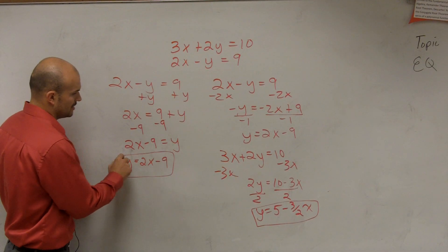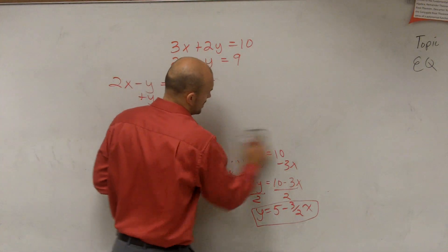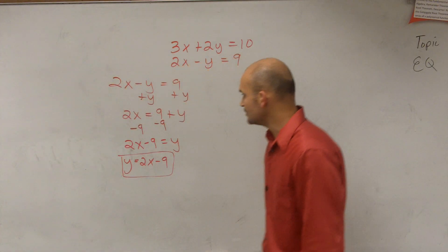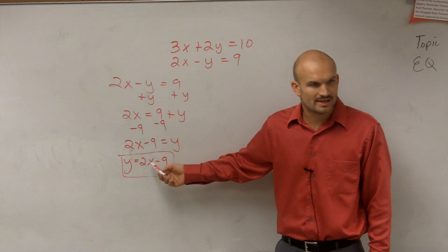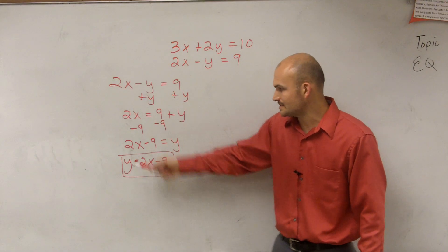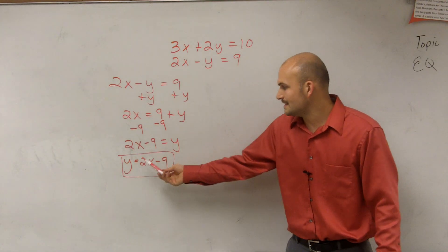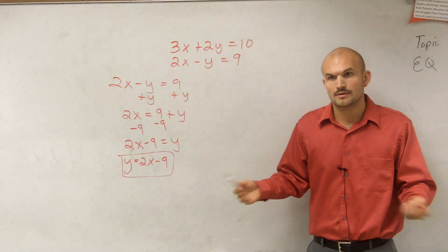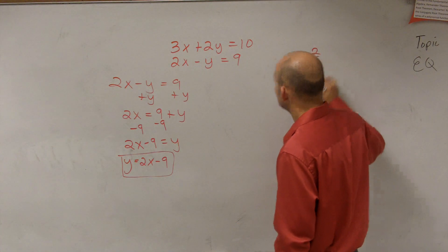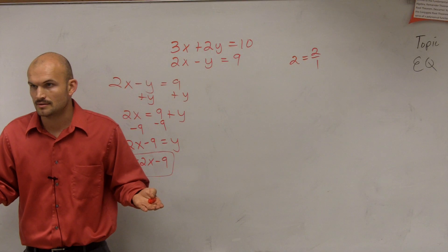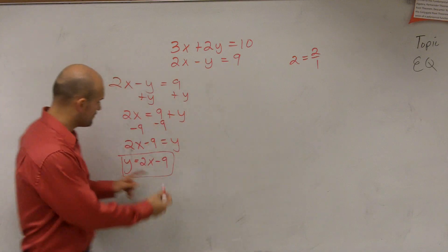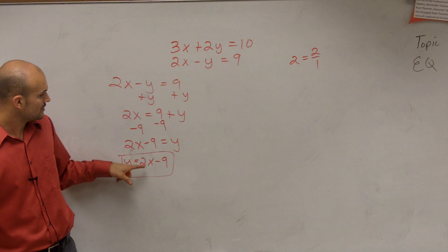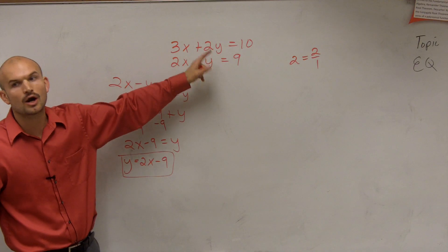Now the next step is to replace your variable with its expression. Remember, y equals 2x minus 9 means the value of y, which we do not know, is equal to 2x minus 9 — they're equal in value. Just like 2 is equal to 2 over 1 and you can use either one, y is equal to 2x minus 9. So we're going to use the value of y and plug it into the other equation.